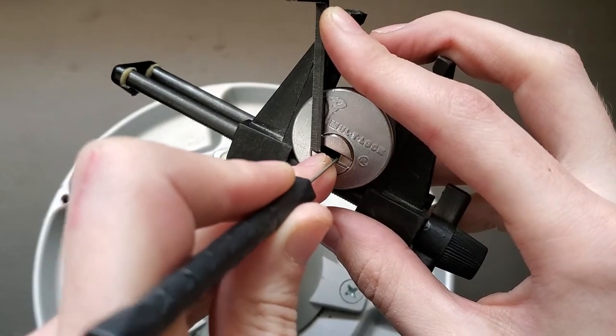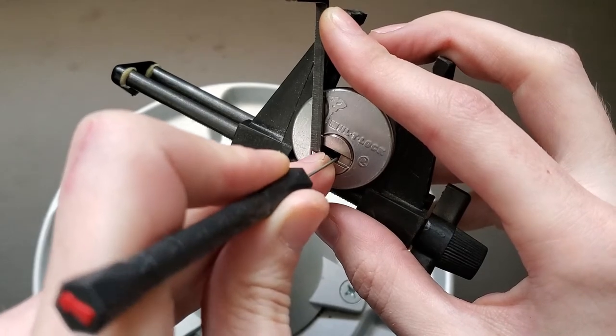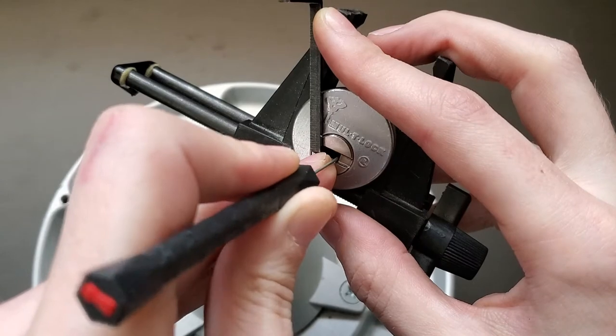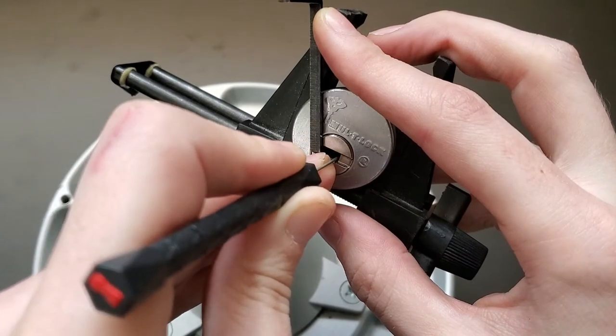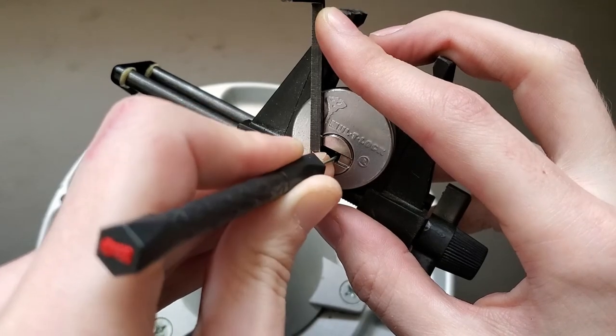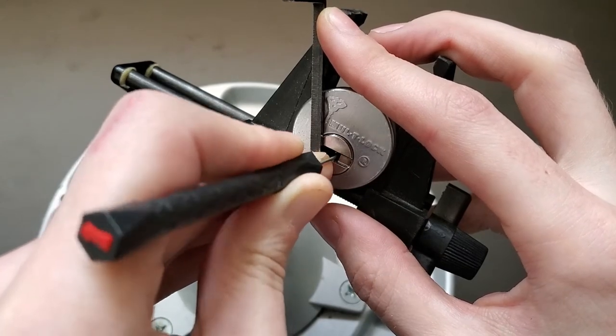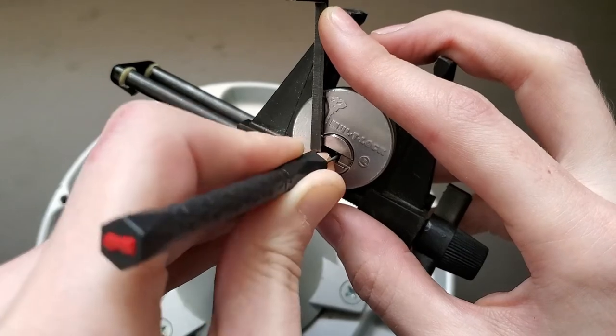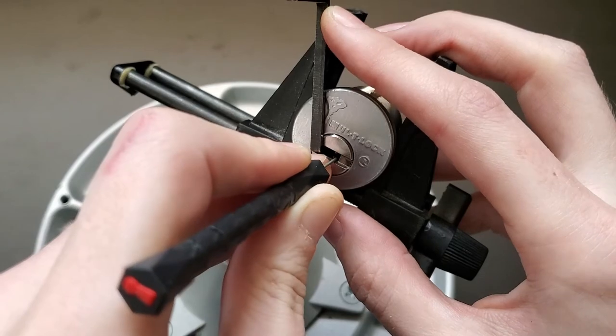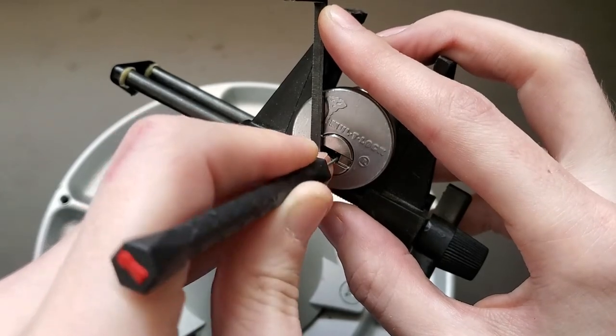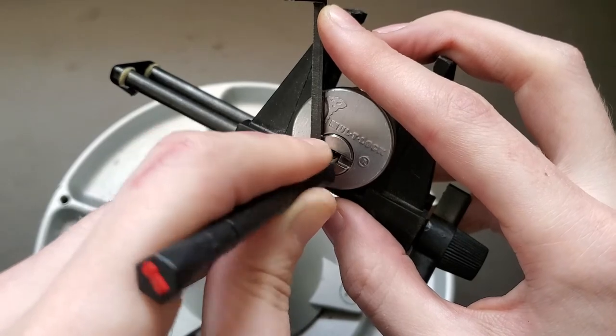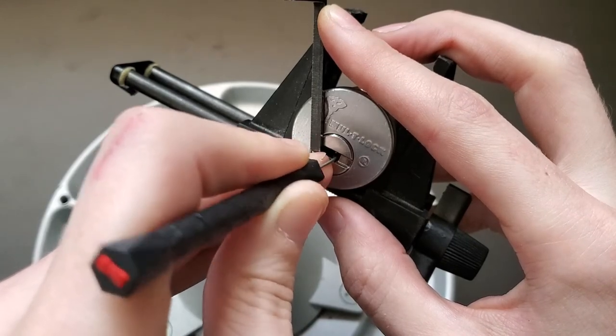So we get a little click on outer number one first. Outer number two goes all the way up, and we get a nice false set out of that. There's the outer on number three. I think that was number four. I'm not sure I might have overset him. Got a good click on outer number five.